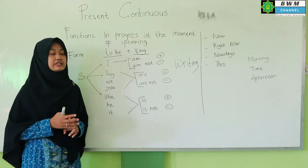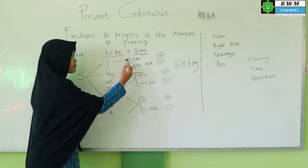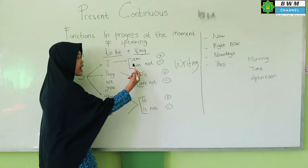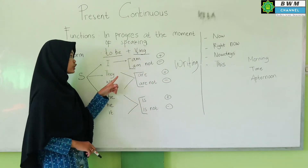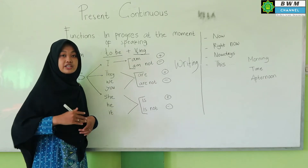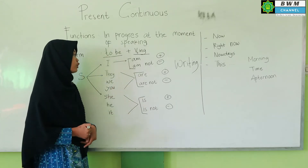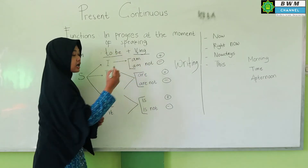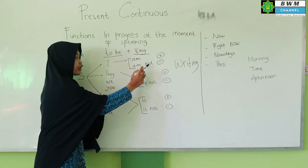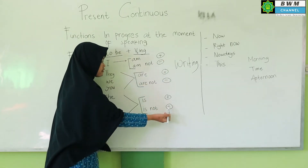Now let's look at positive, negative, and interrogative sentences. For positive: I am writing. For negative — for example if asked 'What are you doing?' and the answer is 'I am not writing' — the negative form adds 'not' after the to be: I am not writing. That is the negative sentence.